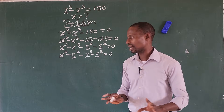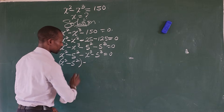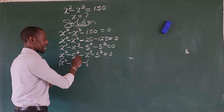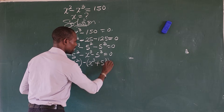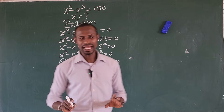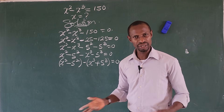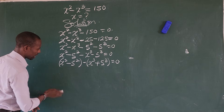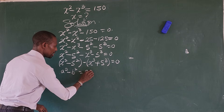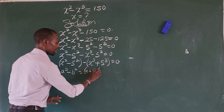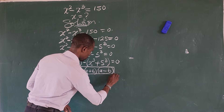So grouping them, this is going to give us x² minus 5², plus — we're introducing a bracket here — minus times minus will give us plus, so we're going to have x³ plus 5³, all equal to zero. If you look at the terms inside the brackets, we can apply what we call the difference of two squares. We know that a² minus b² equals (a+b)(a-b).